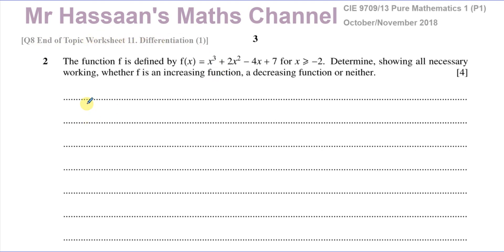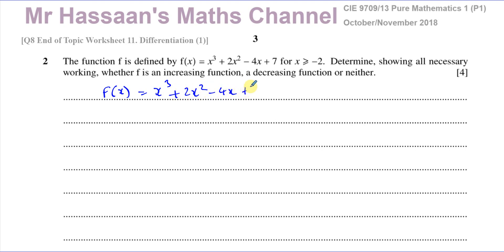Here we've got a question which is telling us about a function defined by f(x) equals x cubed plus 2x squared minus 4x plus 7, and they've told us this function is defined for x is greater than or equal to negative 2.